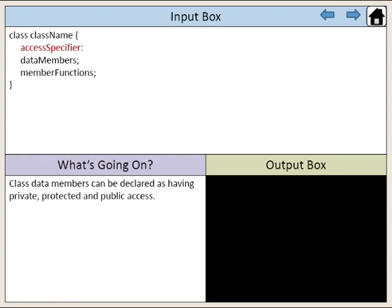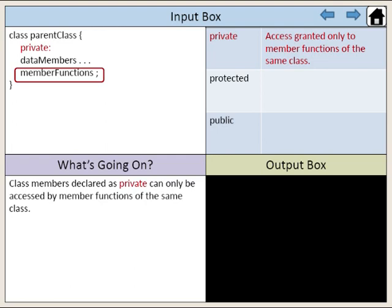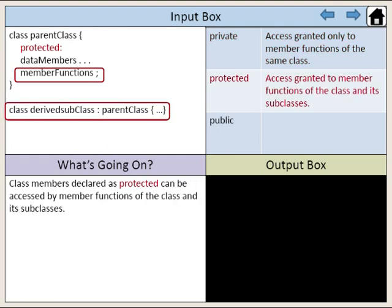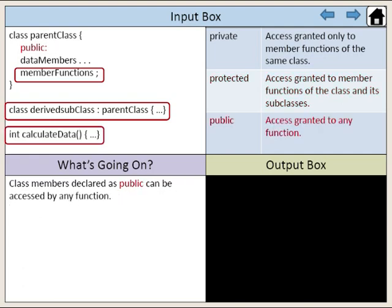A class's data members can be declared as having private, protected, and public access. Class members declared as private can only be accessed by member functions of the same class. Class members declared as protected can be accessed by member functions of the class and its subclasses. Class members declared as public can be accessed by any function.